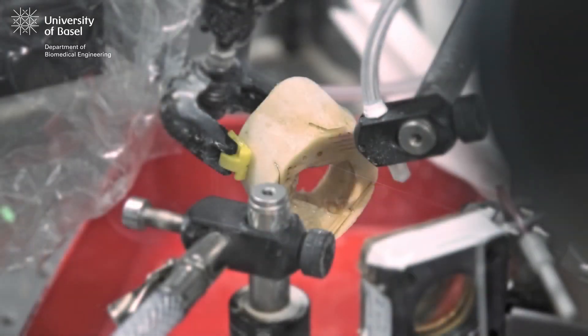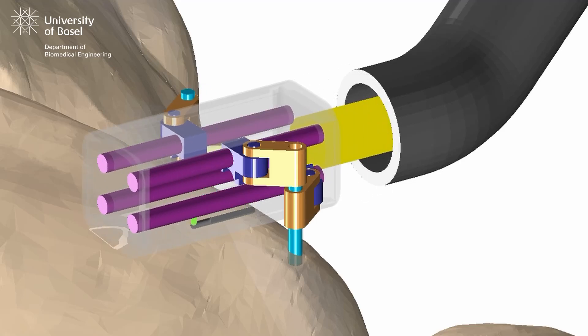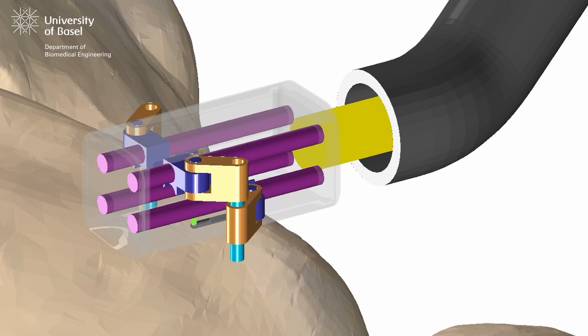In order to make sure that the robot follows the planned trajectory during surgery, real-time feedback on its shape and tip location would be needed.